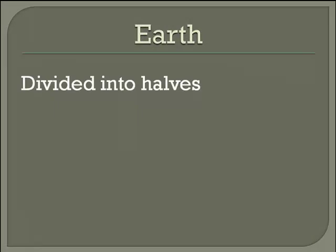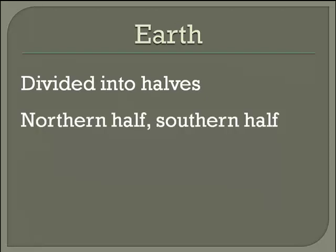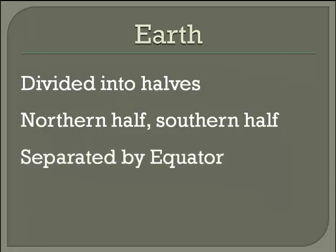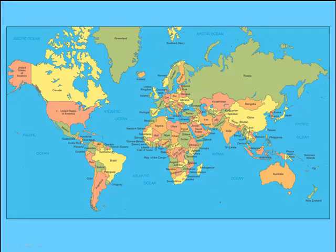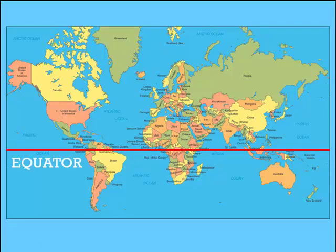The Earth is divided into halves. For today's lesson, we're going to talk about the northern half and the southern half. Those two halves are separated by an imaginary line called the equator. If you look at this map here, you can see the line coming across — that imaginary line. Everything above is the northern half and everything below is the southern half.